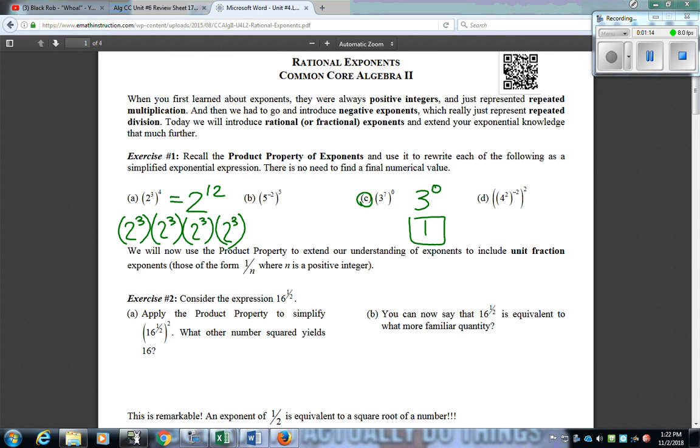For exercise 2, they give us 16 raised to a fractional power. They want us to apply the product property to simplify 1 half squared. If I do 1 half times 2, I'm back to 1. So this would equal 16 to the 1st power, which would just be 16.